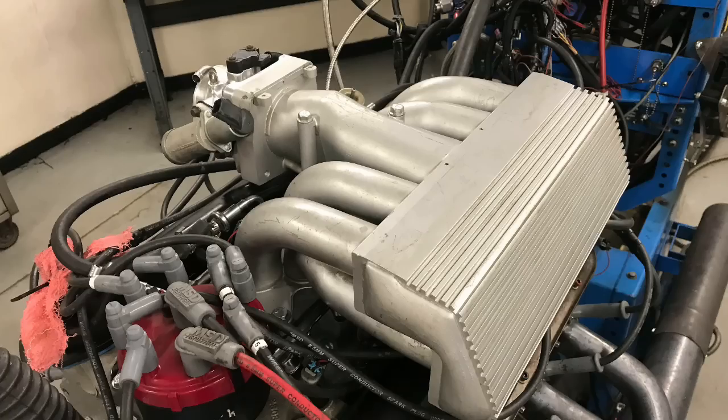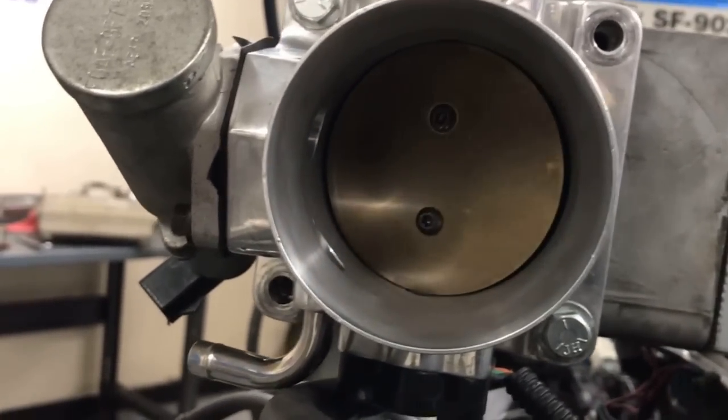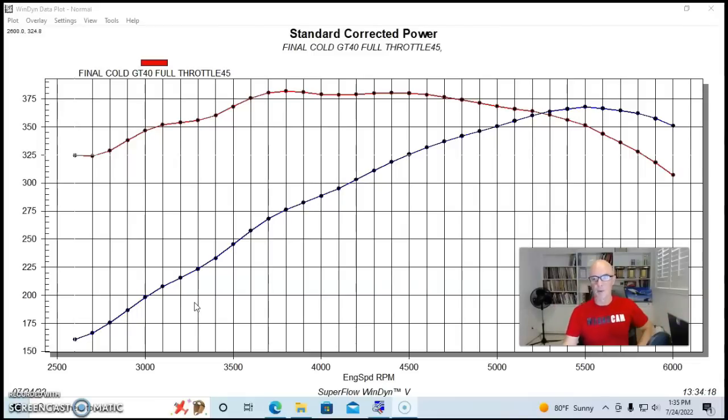We also had it topped with a GT40 intake manifold, the tubular upper intake manifold, and a 65 millimeter throttle body. We obviously optimized the air fuel and timing. It was run on 91 octane.